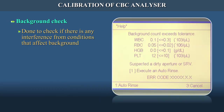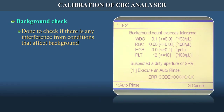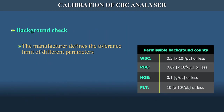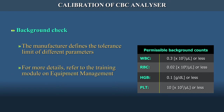Background check: this is done to check if there is any interference from conditions that affect the background — dirty flow cells, dust in the cell pack, bacteria growing in tubings or solutions, lack of grounding or earthing, and noise. The manufacturer defines the tolerance limit of different parameters. For more details, refer to the training module on equipment management. If background is okay, check carryover.